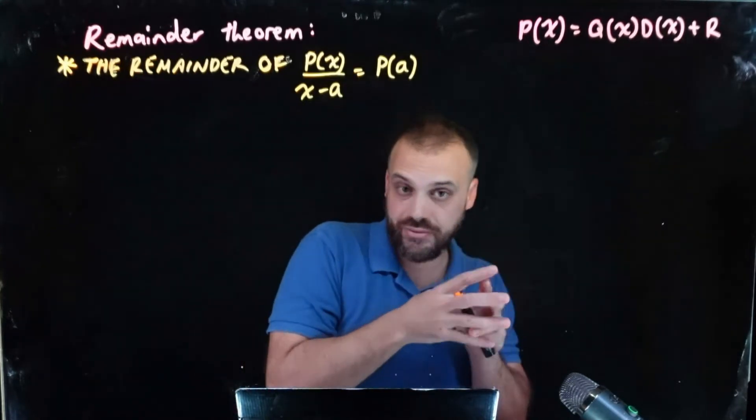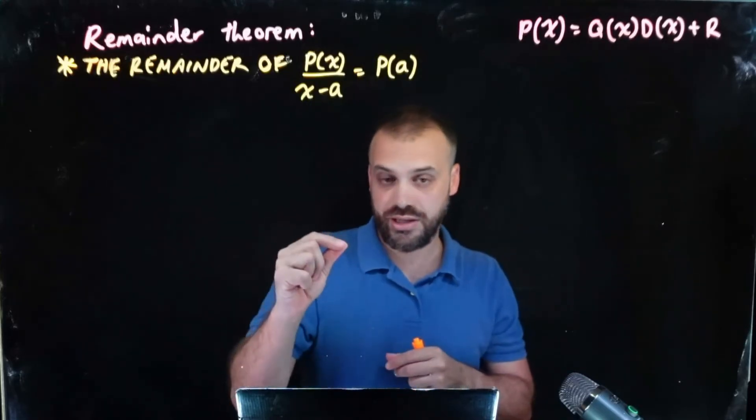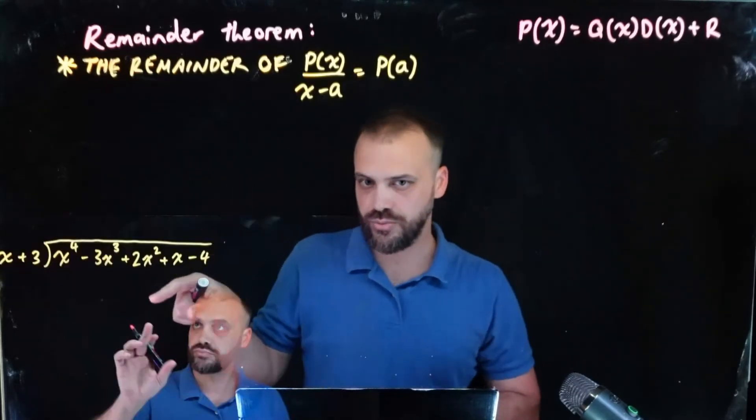Just subbing in the a value, in our case 3, into p(x), and that will give us our remainder. So let's look at how these guys did it again, right? Now this is obvious. He's going to divide it and he's going to find the remainder right down the bottom.